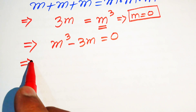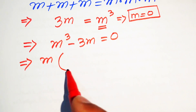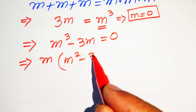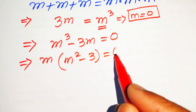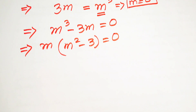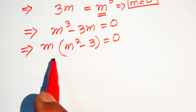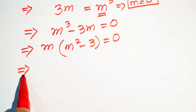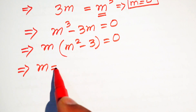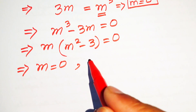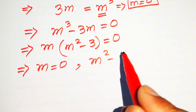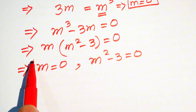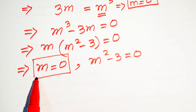We take out common factor m to obtain m times open bracket m squared minus 3 close bracket equals zero. Now we split into two cases: the first case is m equals zero, and the second case is m squared minus 3 equals zero. So m equals zero is the first solution.